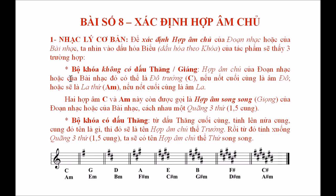Trường hợp thứ nhất, nếu bộ khóa không có dấu thăng hay dấu giáng, thì hợp âm chủ của đoạn nhạc hoặc của bài nhạc đó có thể là đô trưởng, được ký hiệu là chữ C, nếu nốt cuối cùng là âm đô. Hoặc sẽ là la thứ, ký hiệu là Am, nếu nốt cuối cùng của bài nhạc là âm la.